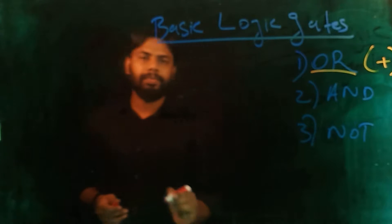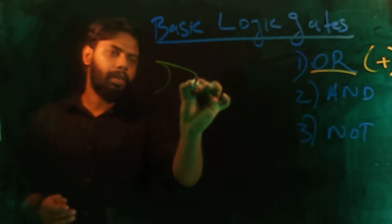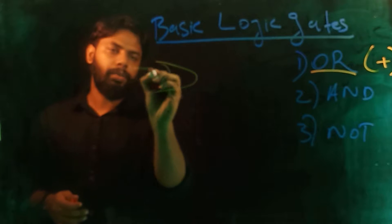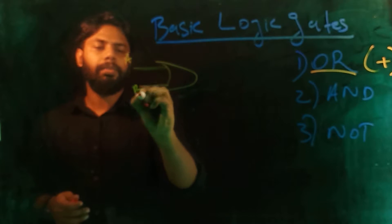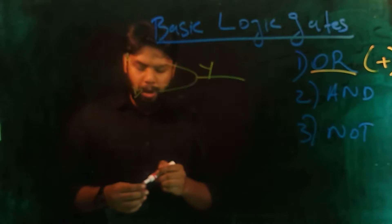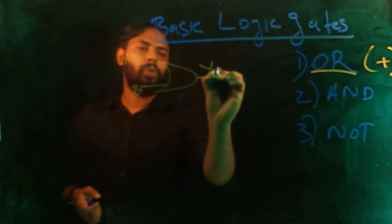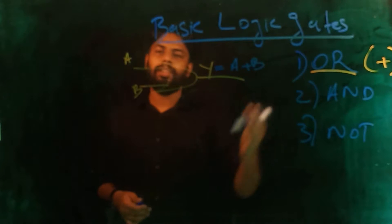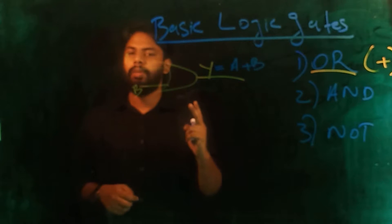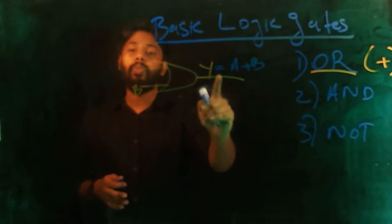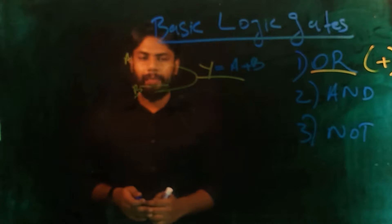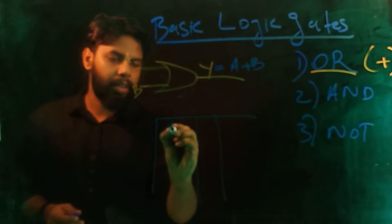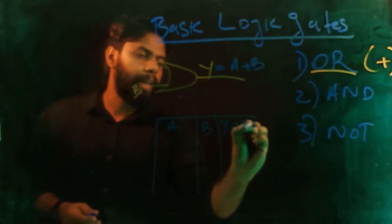We will discuss the logical diagram. The output is a logical OR expression, so it is equal to A plus B. We have two or more inputs — minimum two inputs — and one output. Now let's go to a truth table. The columns are A, B, and Y is equal to A plus B.